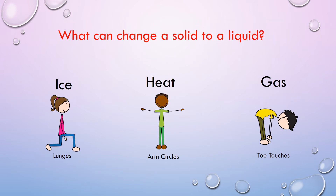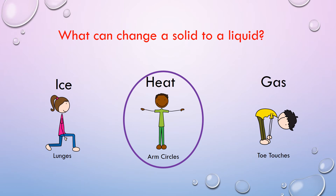Here's our next question. What can change a solid to a liquid — ice, heat, or gas? If you think it's ice, do lunges. If you think it's heat, do arm circles. If you think it's gas, do toe touches. If you were doing arm circles, you chose the correct answer — the answer was heat.